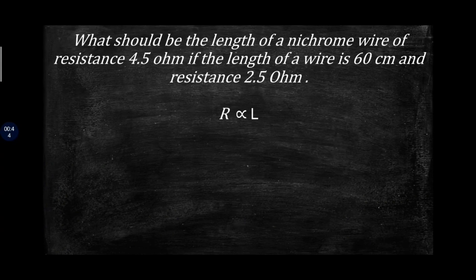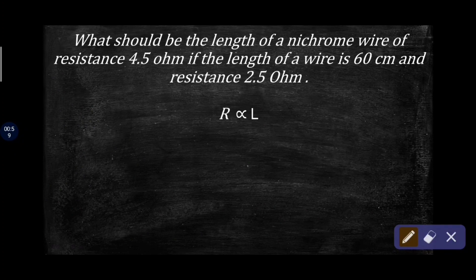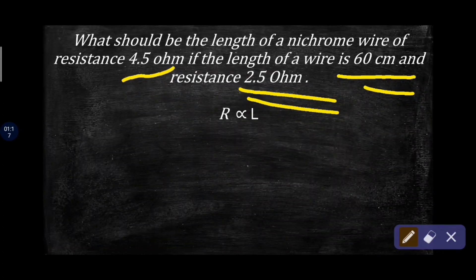First question: What should be the length of a nichrome wire of resistance 4.5 ohm, if a wire of length 60 centimeters has resistance 2.5 ohm? So we have a nichrome wire — 60 centimeters gives 2.5 ohm. Here is a hint: resistance is directly proportional to length. Pause the video and try to solve the question yourself.